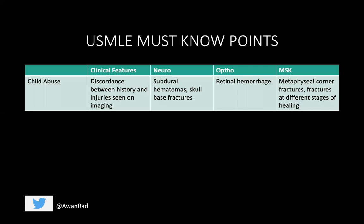The USMLE must-know take-home points: you're looking for a discordance between the history and the injuries seen. They may say the baby fell out of the crib, but you see a metaphyseal corner fracture, fractures in different stages of healing, and a subdural bleed — that's non-accidental trauma. From a neurological standpoint, look for subdural hemorrhages and skull or calvarial fractures. In ophthalmology, look for retinal hemorrhages. In the musculoskeletal system, look for pathognomonic metaphyseal corner fractures and fractures at different stages of healing.